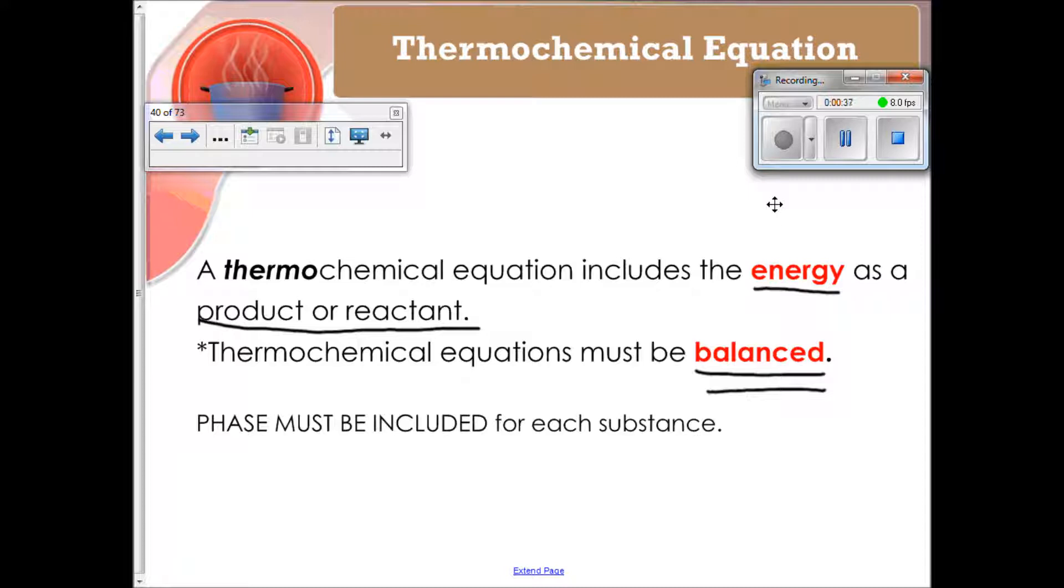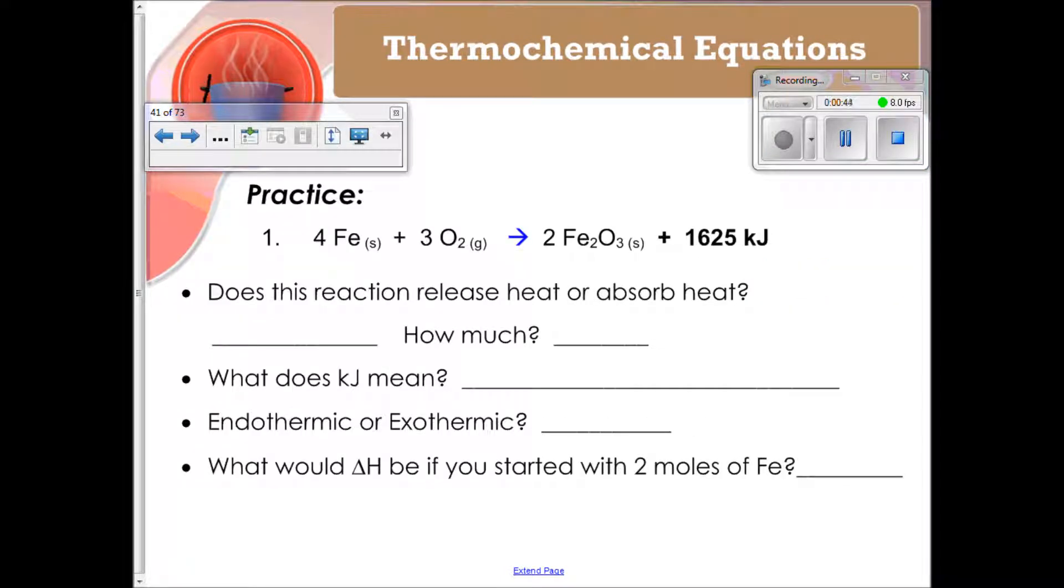And the phases, when you're doing these, must be included for each substance. So that's just a handy trick to remember. Let's start by beginning with an actual thermochemical equation here. If you look at what we're dealing with here, we've got 4 iron solids plus 3 oxygen gases yields 2 moles of iron 3 oxide solid plus 1625 kilojoules as a product.